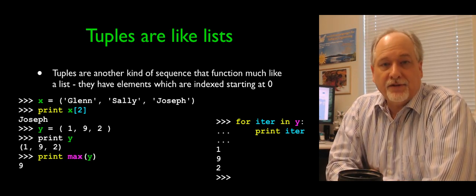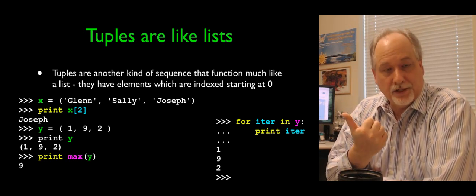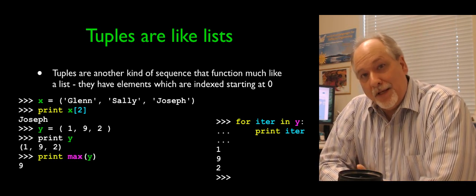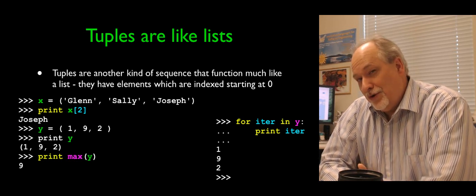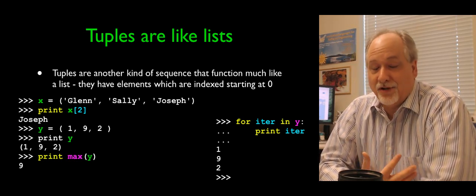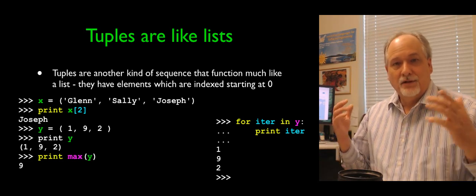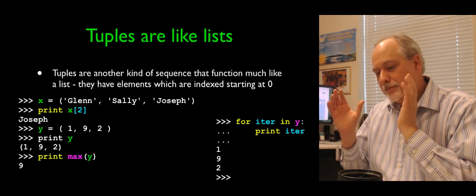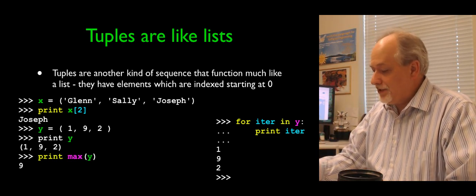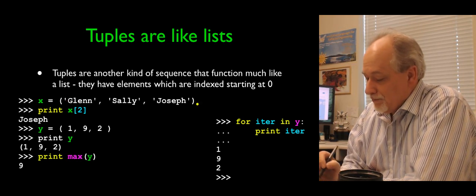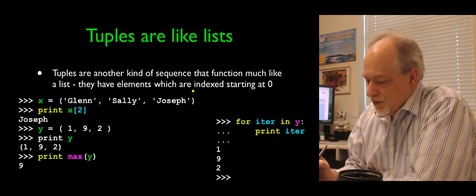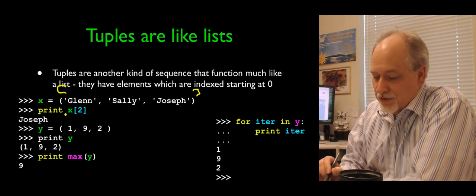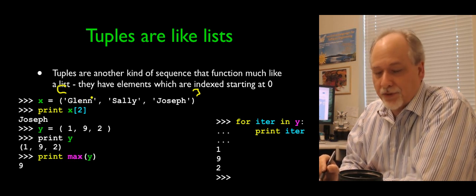So tuples are the third kind of collection that we've talked about. We've talked about lists and dictionaries. In the dictionary lecture, we kind of alluded to tuples. We don't have to talk too much about tuples. We're really shortening the lecture by telling you that they're a lot like lists. They're a non-changeable list.